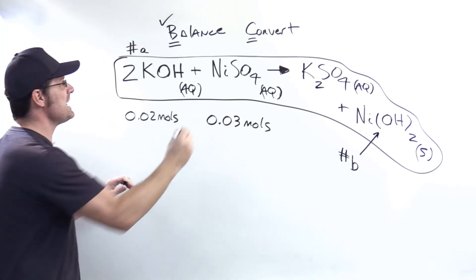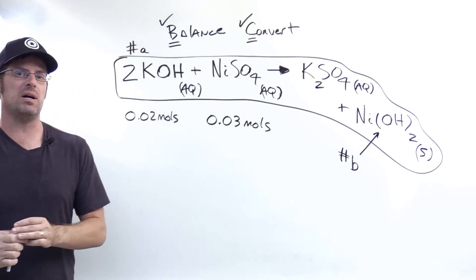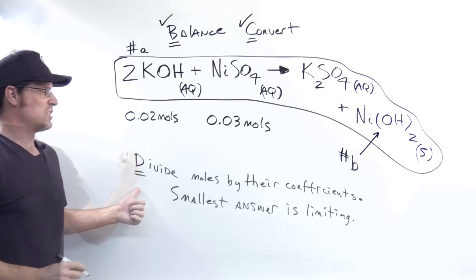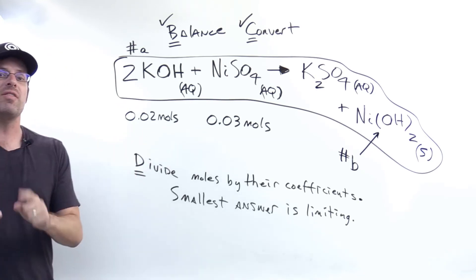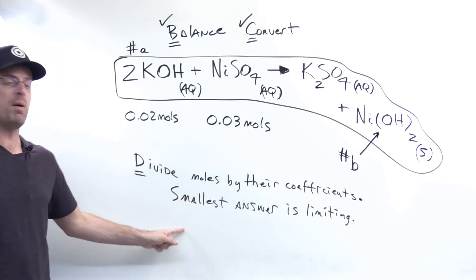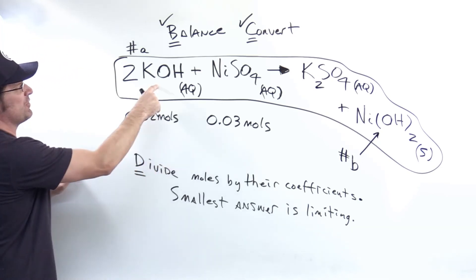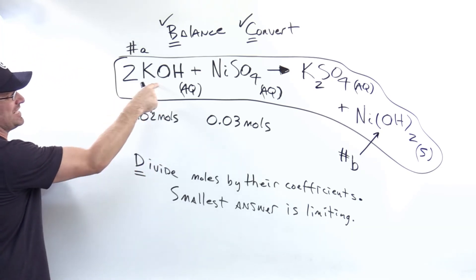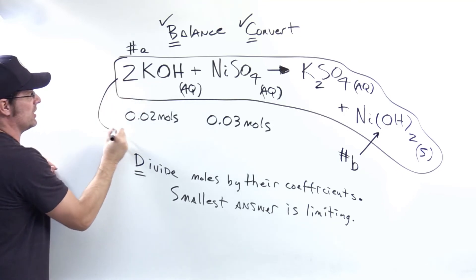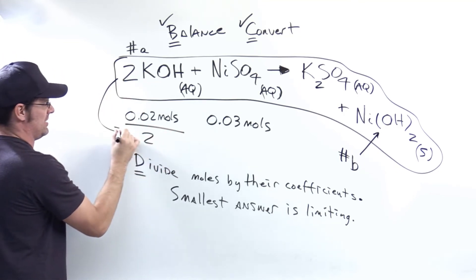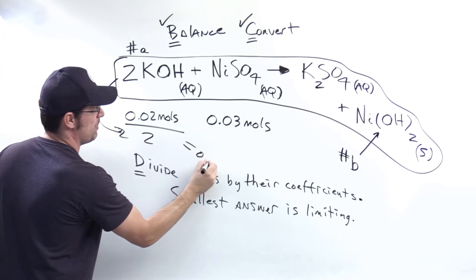We're now done with part C of our BCD process. So what is part D? It's divide each of these moles by their corresponding coefficients. The smallest answer is the limiting reactant. So here I've got 0.02 moles of KOH. So I'm going to take the coefficient tied to the KOH, that's this two, and I'll divide the 0.02 by that two. That will give me 0.01.